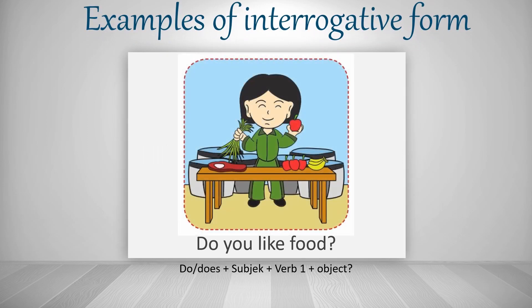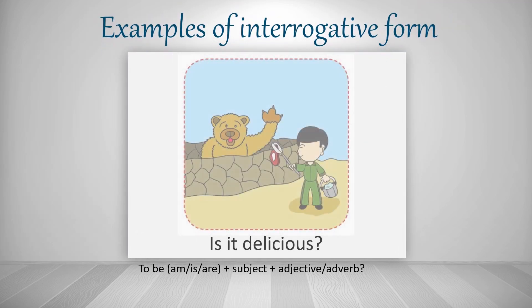For interrogative form: 'Do you like food?' — do + subject + verb 1 + object. And: 'Is it delicious?' — to-be (is) + subject + adjective.